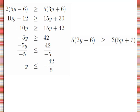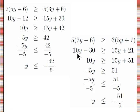All right, so here's the solution. We have it all typed out. Same steps. You distribute, you add 30 to both sides, you subtract 15y from both sides, you divide both sides by negative 5, and you end up with a new inequality, y is less than or equal to negative 51 fifths.